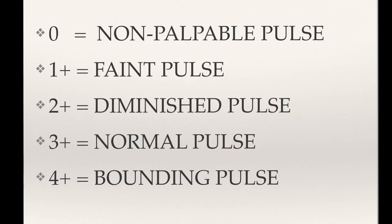You want to assess the strength of a pulse. Pulses can be described as zero indicating no palpable pulse, one plus indicating a faint pulse, two plus suggesting a slightly more diminished pulse than normal, three plus being a normal pulse, and four plus indicating a bounding pulse.